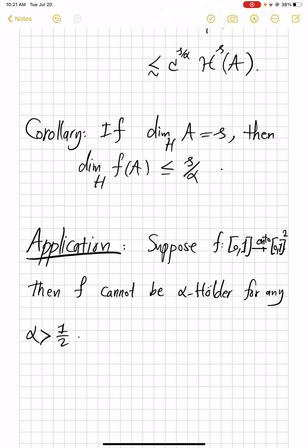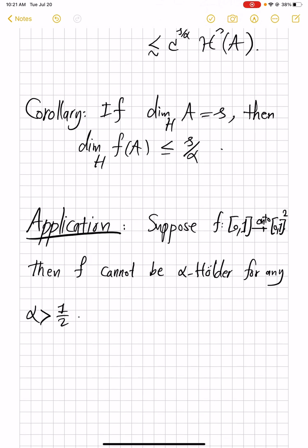So that means you cannot have space-filling curves that are too smooth, too regular. In general, we love Lipschitz maps, so if the alpha is closer to 1, that means that the function is nicer. So this is saying that you cannot have alpha bigger than 1/2. That means you cannot have too nice of a function and still have the unit interval cover the unit square.